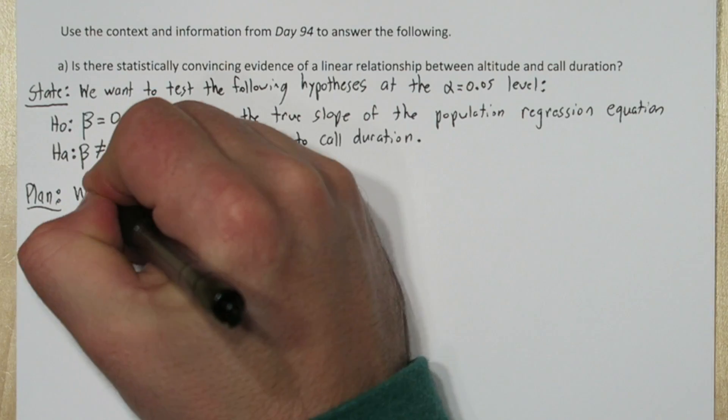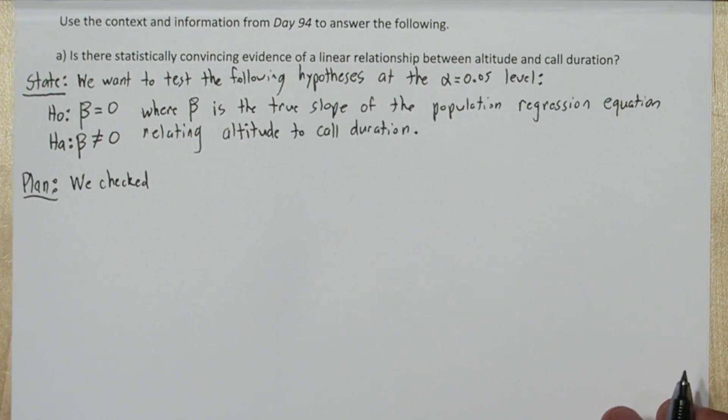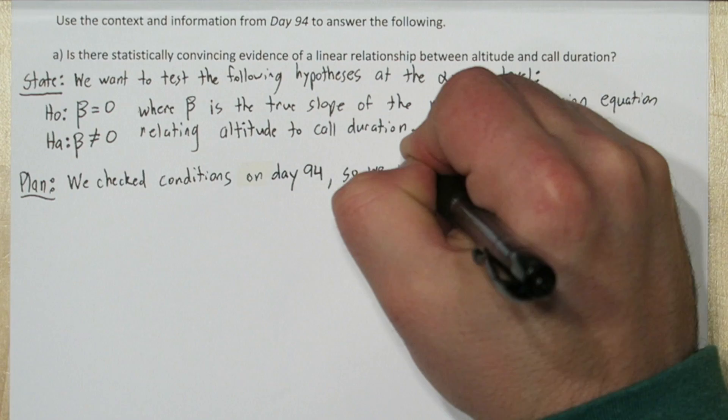So in the plan step, we normally check conditions, but we already checked them on day 94. So we're ready to do a t-test for beta.